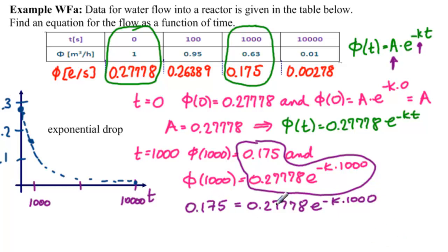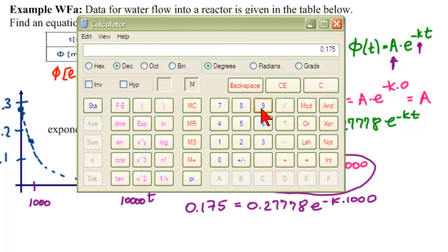we have 0.175 equals 0.27778 e to the minus k times 1,000. We're going to divide this by this, right? And then take logs of both sides. So, let's do that. So, get our calculator,